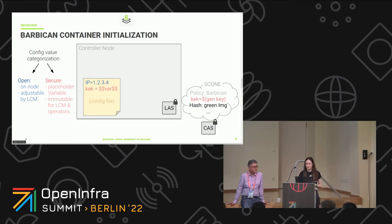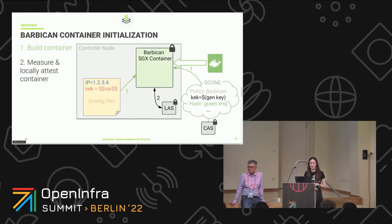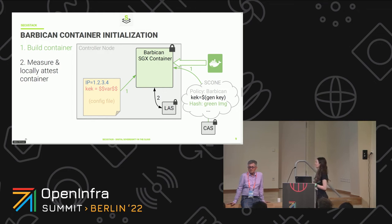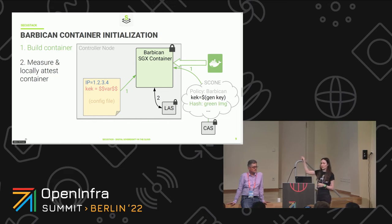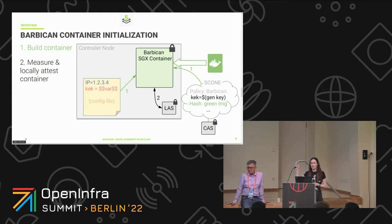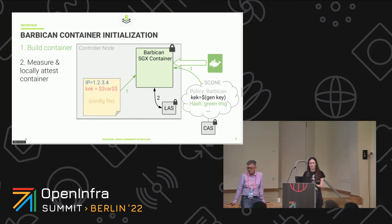There are two ways to get the KEK into the policy. It is either provided with the SCONE file at creation, or — a better way — you can instruct SCONE to generate a key, so the key is generated inside the CAS. The CAS and LAS also have a lock icon on them — they are also executed in an SGX environment. So if we generate a key into the CAS, installed in an enclave there, no one can access it. When we start a container and initialize it, the generated key is transferred directly into the enclave of the container.